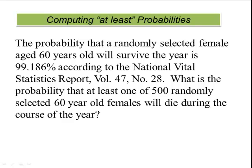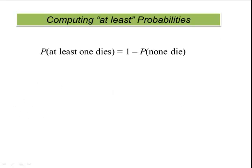So the probability that at least one dies is equal to one minus the probability that none of them die. So none of them dying is the same thing as that all of them survive. So all of them surviving would be 0.99186 to the 500 power, which turns out to be 0.0168. So the probability that at least one female aged 60 will die out of a group of 500 is more than 98%.